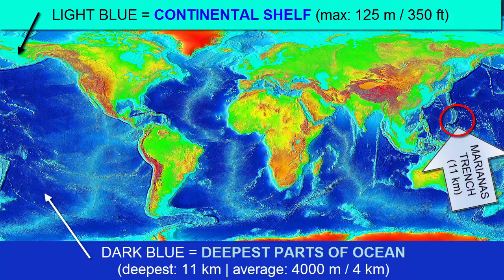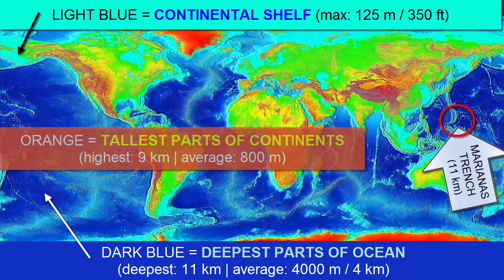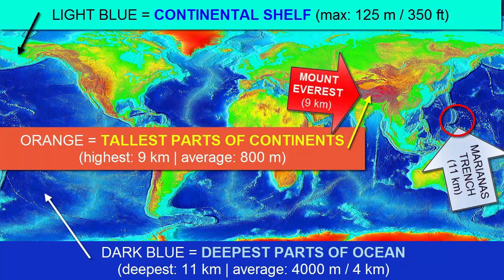The deepest part is the Marianas Trench at 11 kilometers. In comparison, when you look at the land, you see the higher elevation areas are marked orange and red. Most of the land is not at a high elevation. The average height of land above sea level is 800 meters. The highest elevations are found in the Himalayas — Mount Everest, the tallest, is approximately 9 kilometers above sea level.